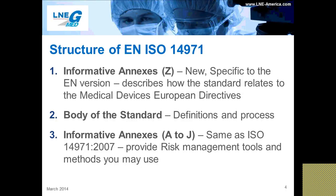So let's get started with the structure of EN ISO 14971. If you look at the standard, you'll see that it's broken up into three different parts. The informative Annex Z, with annexes ZA, ZB, and ZC. And the body of the standard, with nine sections, and then another set of informative annexes from A to J. The first set of three informative annexes — A, B, and C — are specific to the harmonized standard EN ISO 14971:2012. They establish the relationship between the standard and the three main medical device directives with essential requirements. This is why it's called a harmonized standard. Compliance with the clauses of the standard confers a presumption of conformity with requirements of a given directive. The Annex Z explains to which requirements, under which conditions, and to what extent presumption of conformity can be claimed.